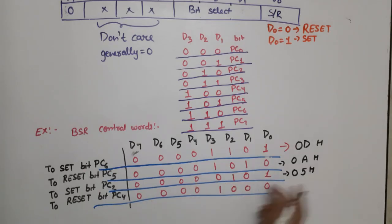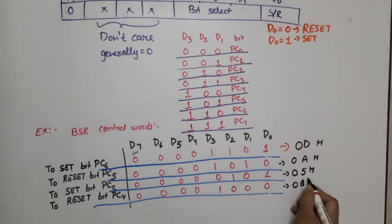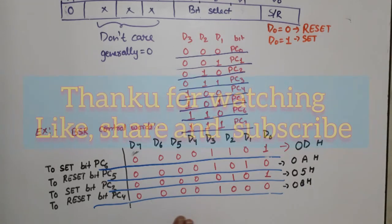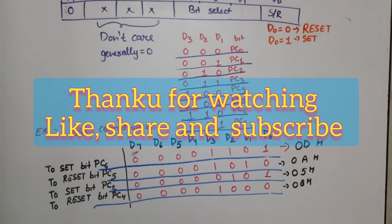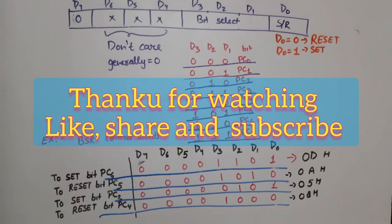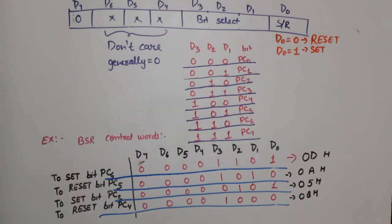For resetting PC5 the control word gives 0AH, and for resetting PC4 the control word gives 08H. This completes the BSR mode examples. If you have any doubts related to BSR mode or any other mode, please write in the comment section. Thank you so much.